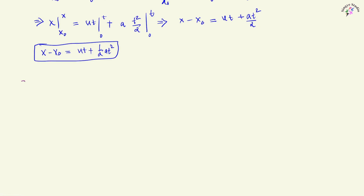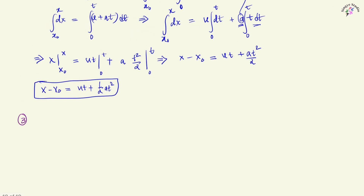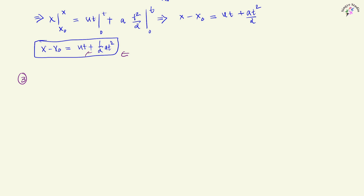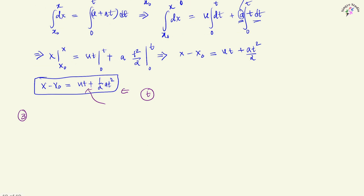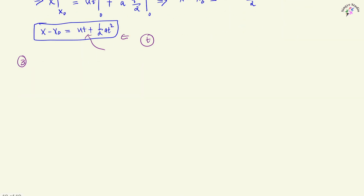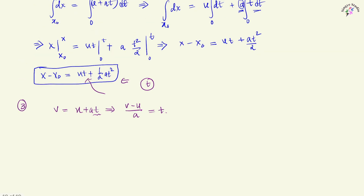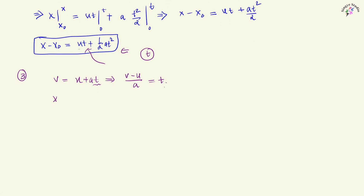Now, equation number 3. We can derive this equation by eliminating the time term t. From equation 1, we have v equals u + at, and making t the subject gives t equals (v - u)/a. Substituting this t into the second equation, we get x - x₀ equals u·(v - u)/a plus ½a·((v - u)/a)².